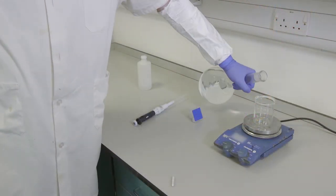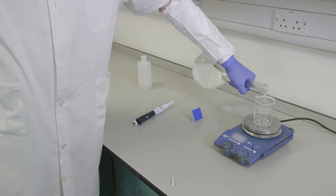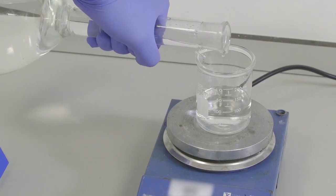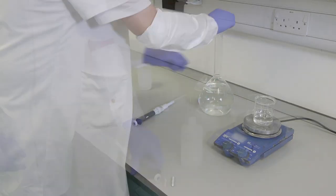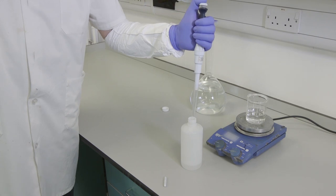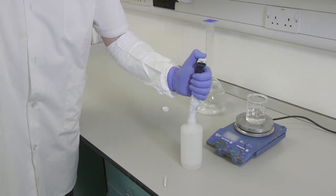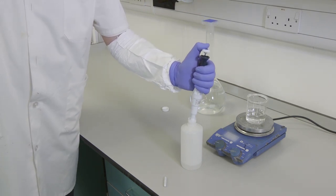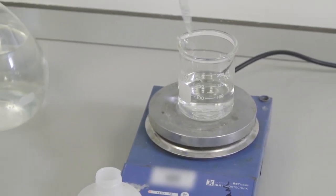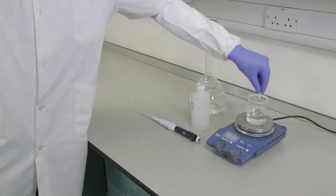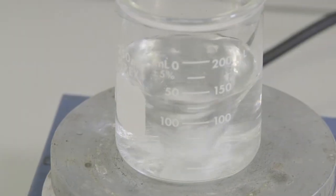Prepare 50 millimolar Tris buffer saline solution and add 1% Triton X100 to a proportion of the solution. Put a magnetic stirrer in the beaker and stir until the Triton has gone into solution.